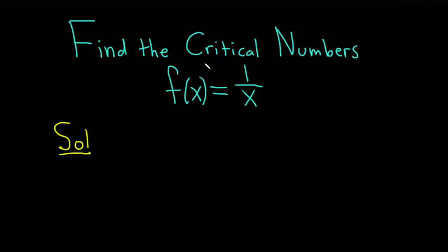First you have to know what a critical number is. Critical numbers are numbers in the domain of the function — meaning that you can plug them into the function and everything makes sense — where the derivative of the function is 0 or undefined. Critical numbers are numbers in the domain of the function where the derivative is 0 or undefined.